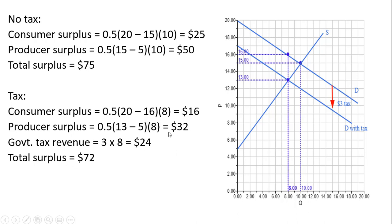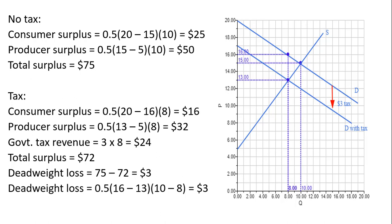We could back into the deadweight loss by looking at the change in total surplus — it went from $75 to $72. We can also measure the deadweight loss more directly by calculating the deadweight loss triangle, which has a height of 16 minus 13 and a base of 10 minus 8, also giving us a deadweight loss of $3.